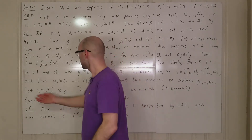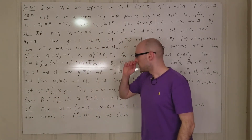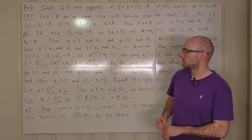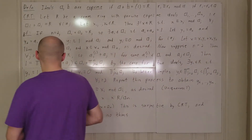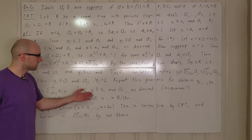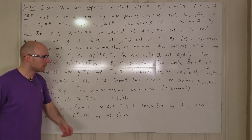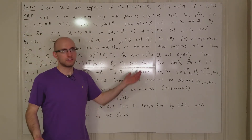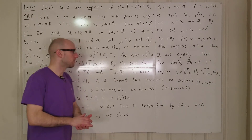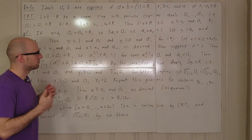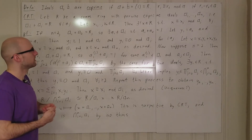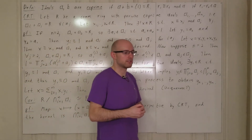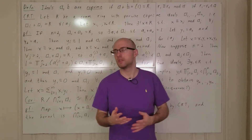We take x to be the sum of xi*yi for i equals 1 to n, just as in the n equals 2 case. By construction, x is congruent to xi mod ai for every single i, which is exactly what we wanted. This completes the general case. The one thing I'm not certain about is uniqueness, which wasn't covered in class — I suspect it should be fairly obvious, but I'm not 100% sure on all the details.